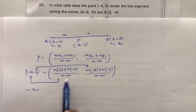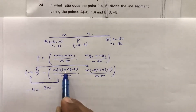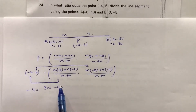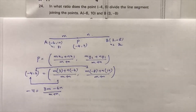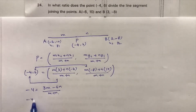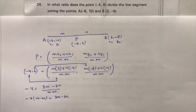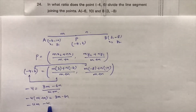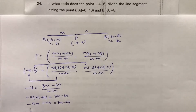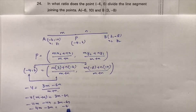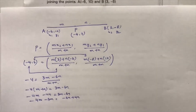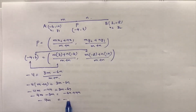Equating the abscissa: -4 = (3m - 6n) / (m + n). Cross-multiplying: -4(m + n) = 3m - 6n, which gives -4m - 4n = 3m - 6n. Rearranging: -4m - 3m = -6n + 4n, so -7m = -2n.